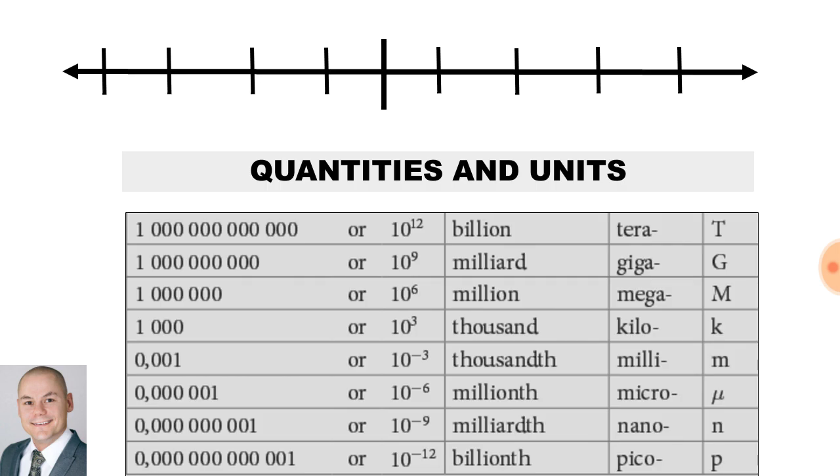Now I have a number line. Everything to the left of the number line is positive. And everything to the right of the number line is negative. Now these exponents and quantities and units will help us with our calculations.